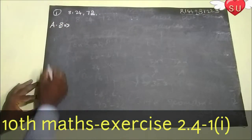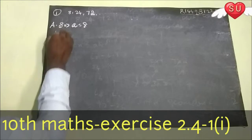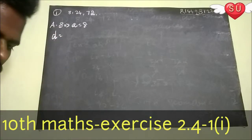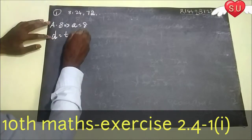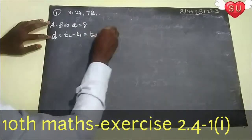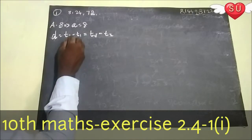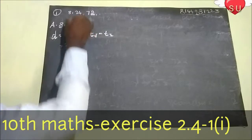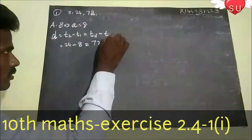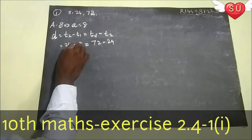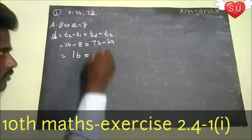For the arithmetic sequence check: the first term A equals 8. The condition is T2 minus T1 equals T3 minus T2. So: 24 minus 8 equals 16, and 72 minus 24 equals 48. These are not equal.